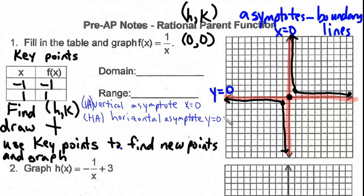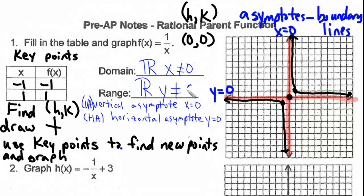The domain of the parent function is all real numbers except where x is equal to 0, because there are no x values that touch the line at x equals 0. The range is all real numbers, but y is not equal to 0, because this graph does not touch the line at y equals 0.